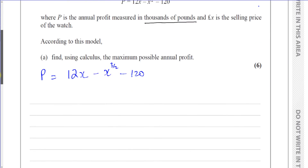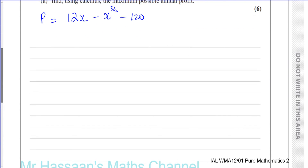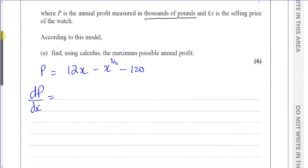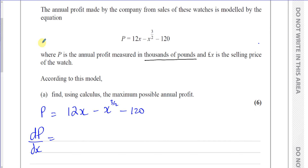We want to find the maximum annual profit using calculus. So this equation gives us a curve, and we want to find the turning points on this curve. We need to find the gradient function and when the gradient is zero. The gradient function will be dP/dx — not dy/dx — because this is a real-life situation where P stands for profit. If you were to draw a graph, the Y-axis would be P and the X-axis would be X, the price of the watch.